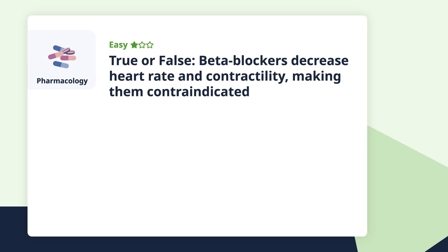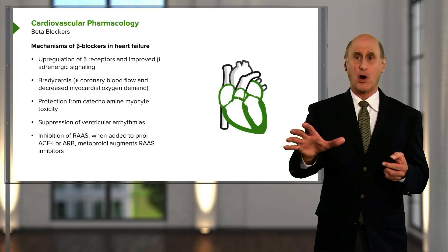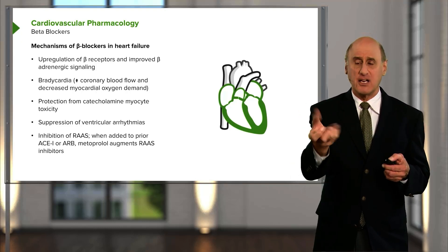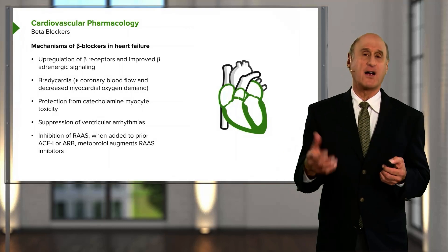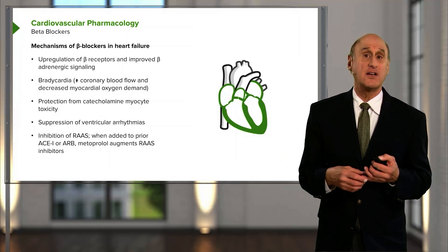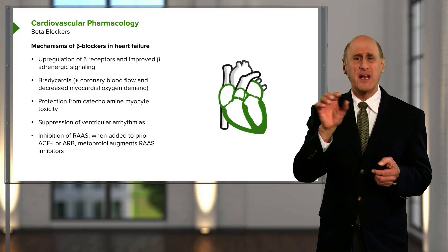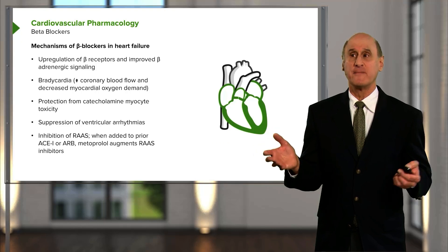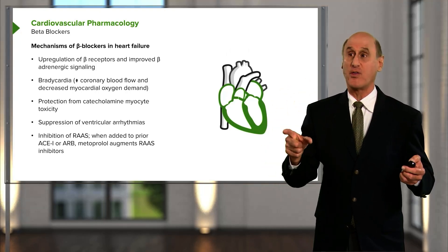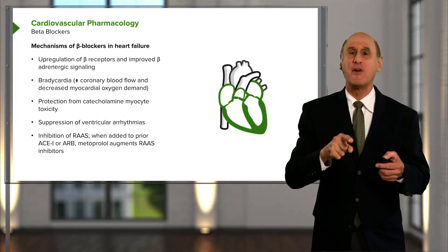Round four: pharmacology. Let's start with a warm-up question. True or false: beta blockers decrease heart rate and contractility, making them contraindicated in heart failure? When I was in training, we were told never to give a beta blocker to a patient with heart failure. But in Sweden, doctors ran large clinical trials and demonstrated that early on beta blockers might worsen things slightly, but long-term, many hearts remarkably improved. Something taught as absolute contraindication became the exact opposite — you should give a beta blocker to a patient with heart failure.